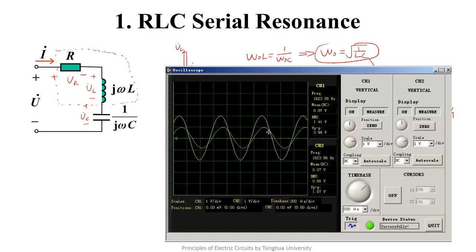Channel 1 of the virtual oscilloscope is connected to the input signal, and channel 2 is connected to the output. Let's look at the waveform on the oscilloscope. The yellow waveform is the input voltage. The green one is the output voltage.